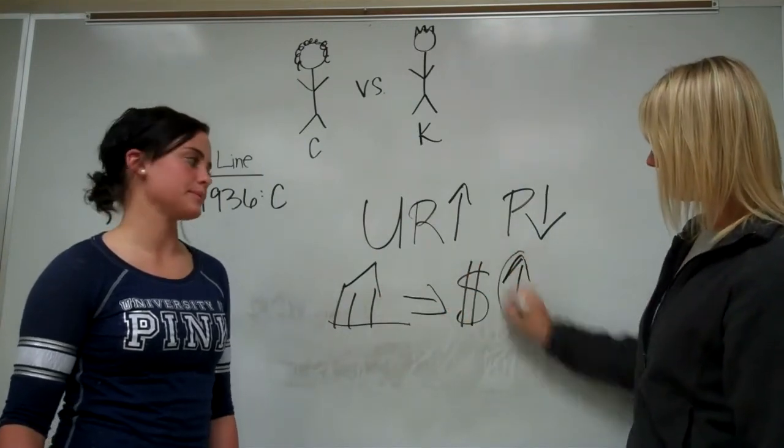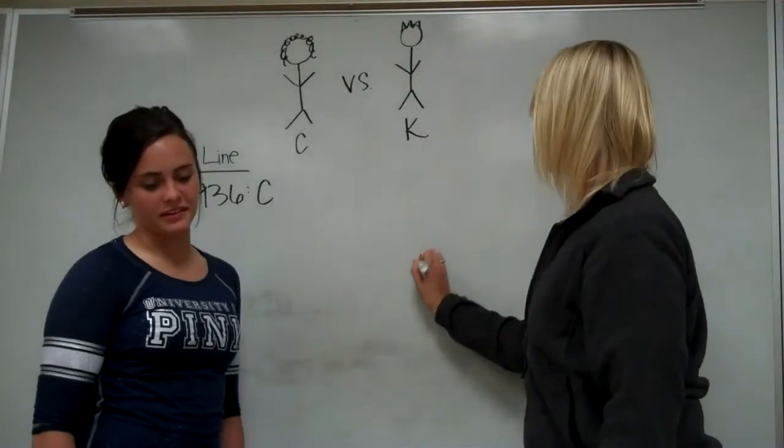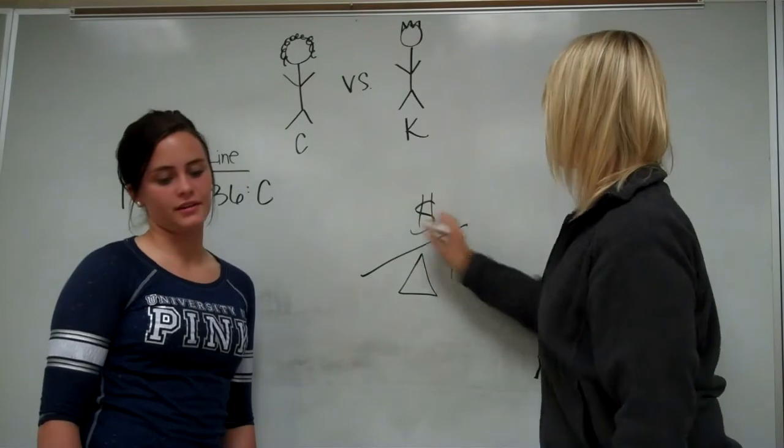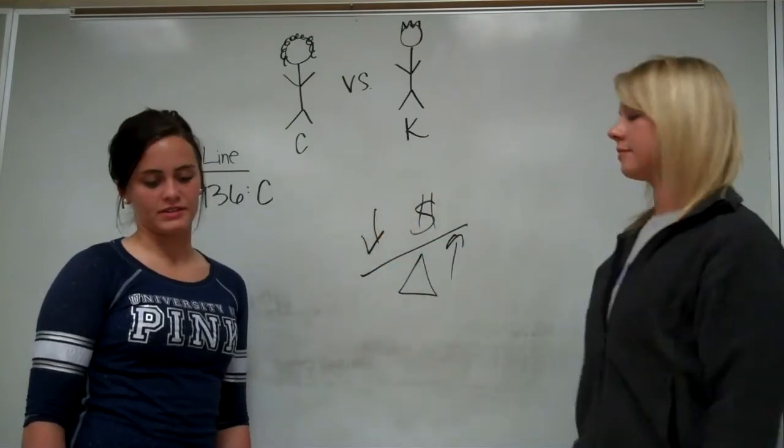In a Keynesian economy, theorists believe the economy is unstable and does not self-regulate. Therefore, government interference can be useful.